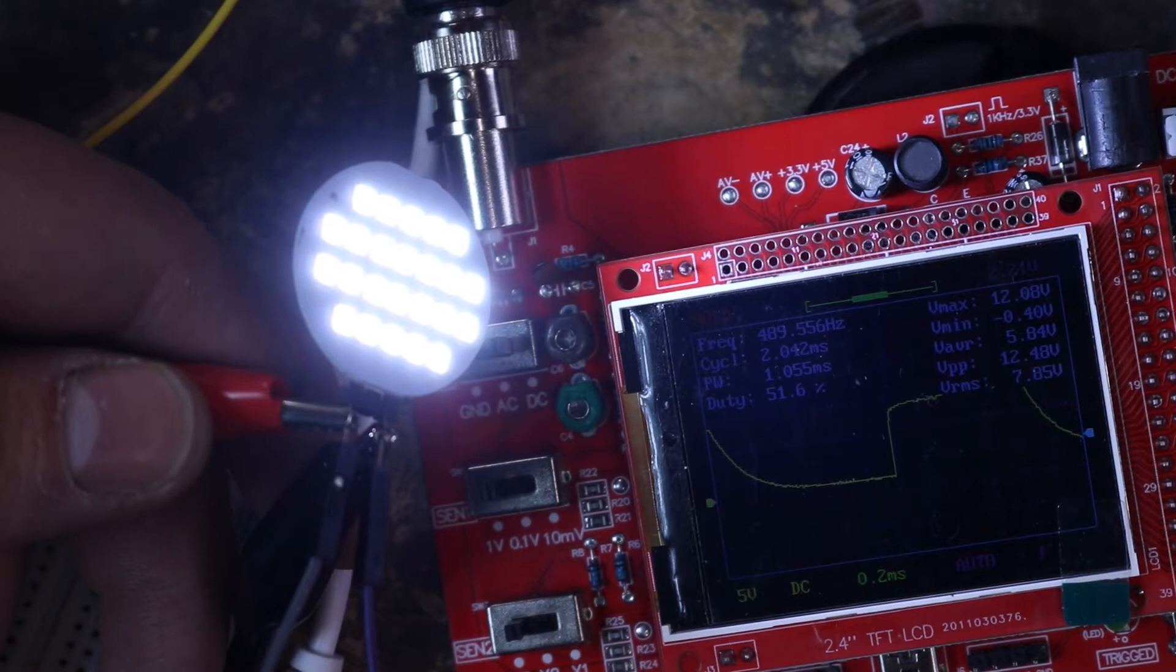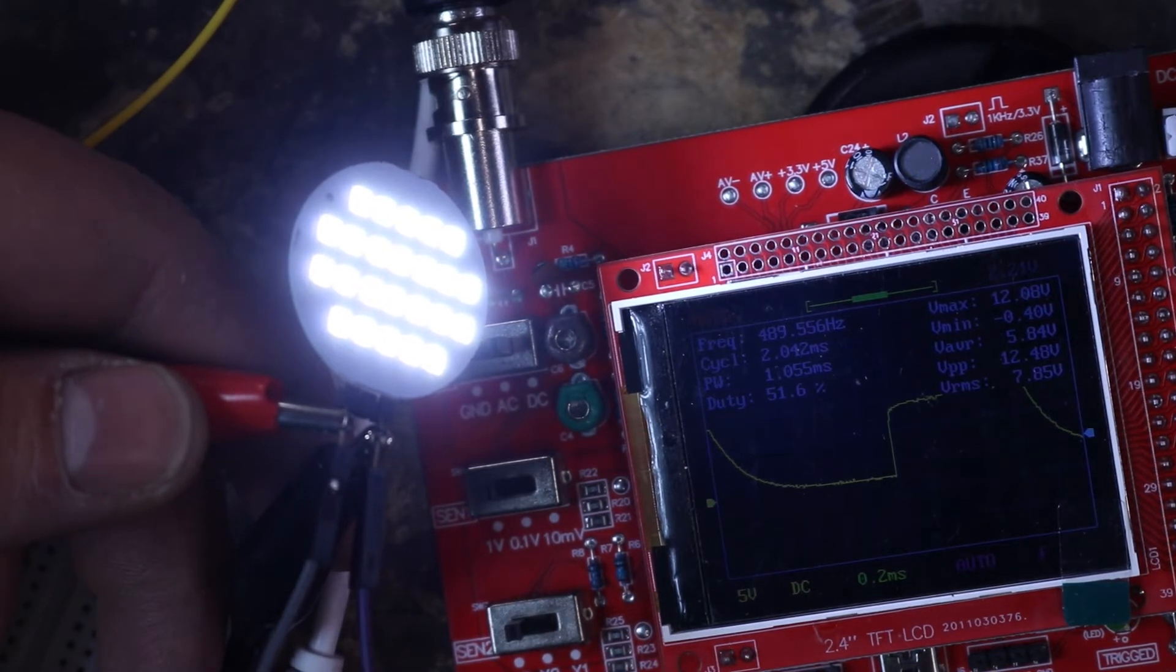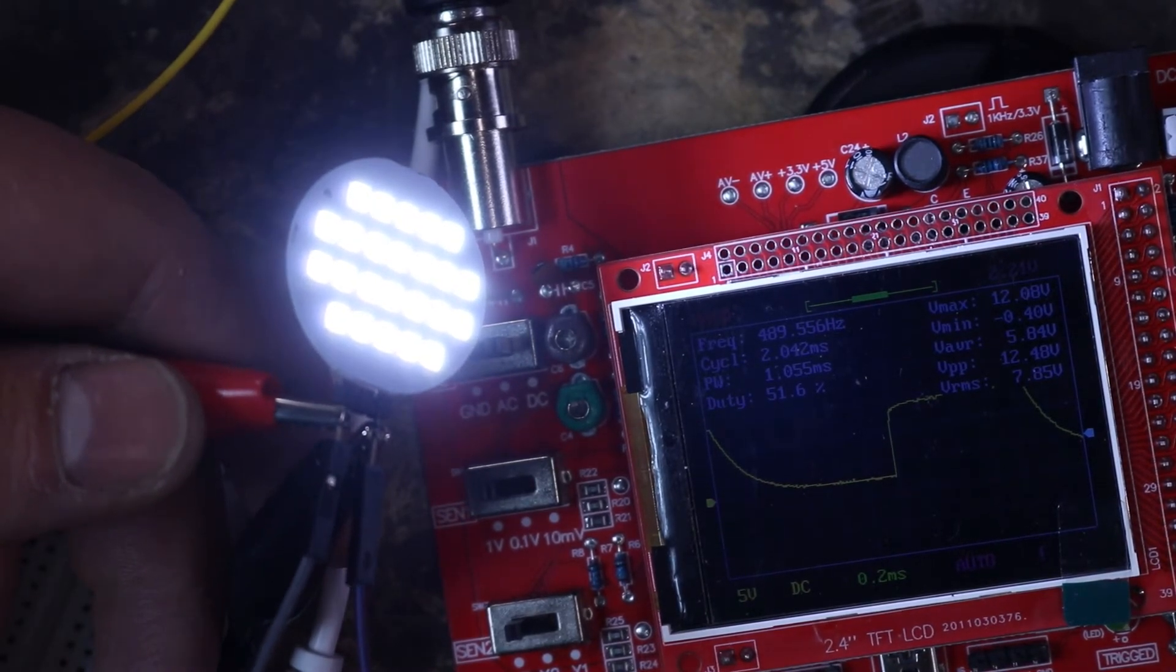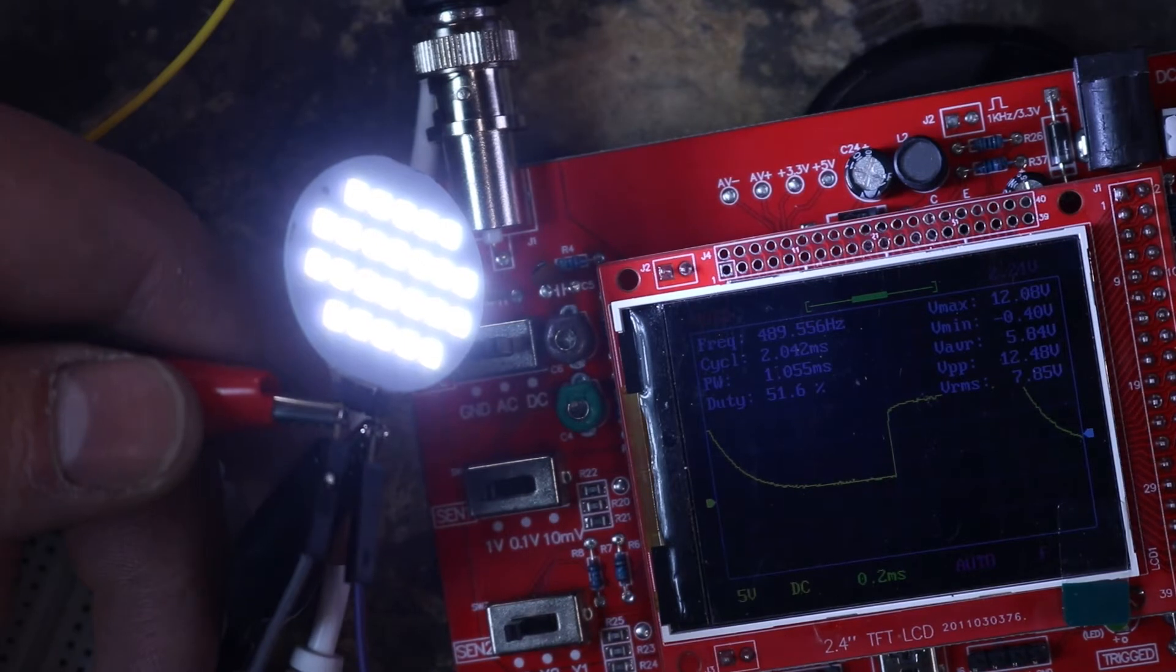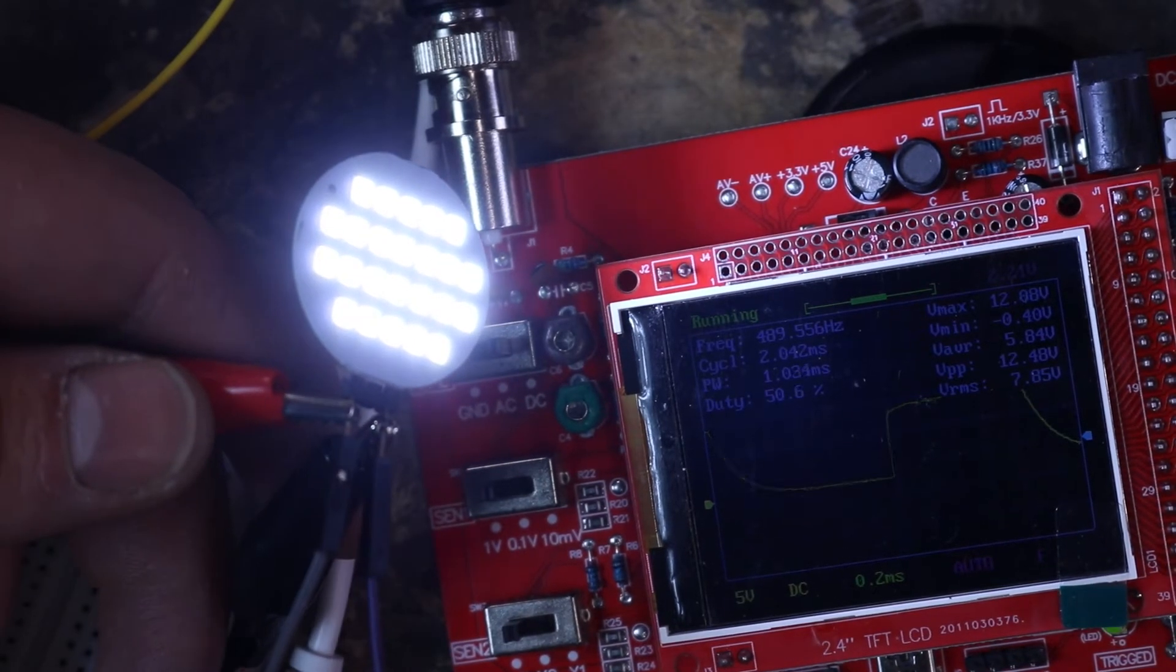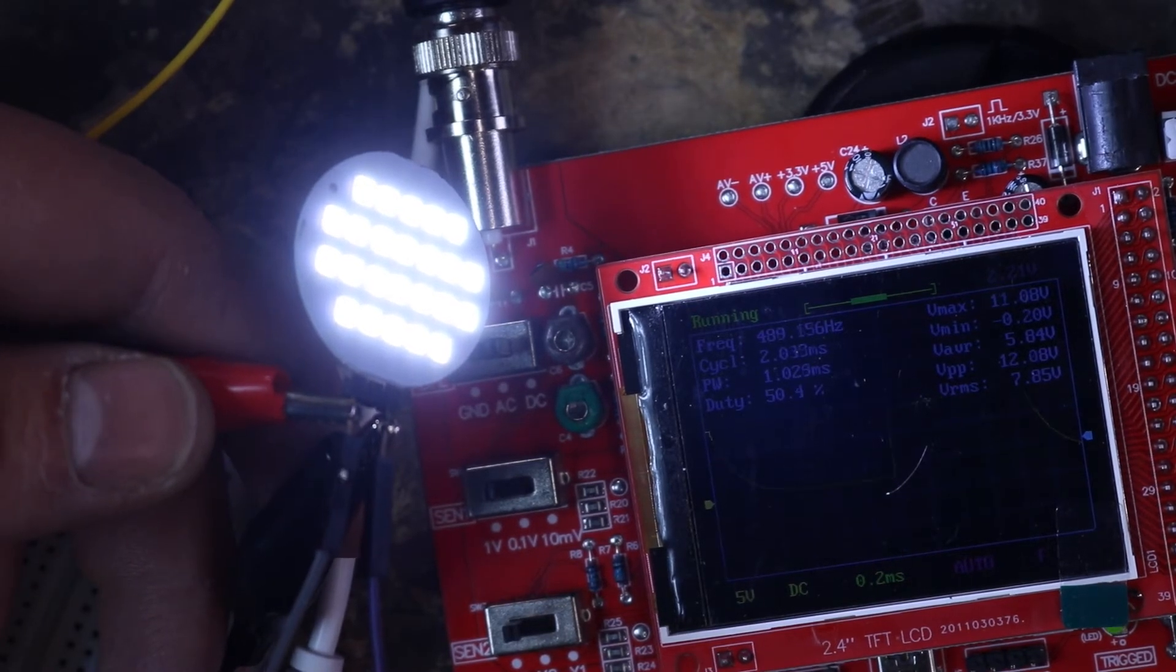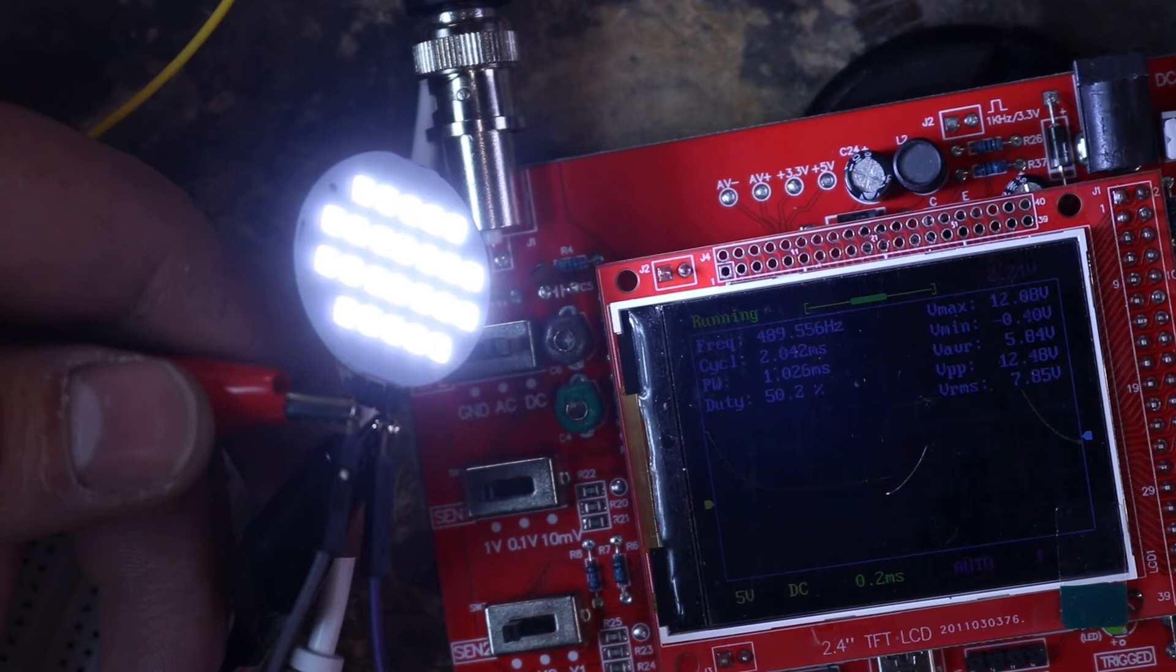So this is what the LED bulb would look like if it was being input a DC voltage of 5.84 volts. That's pretty much what the duty cycle does. It gives you a 12-volt straight DC input, but since you turn the bulb on and off at certain increments of time, it actually averages out to the percentage of that duty cycle.